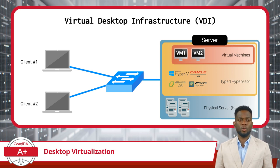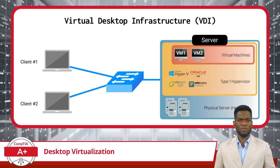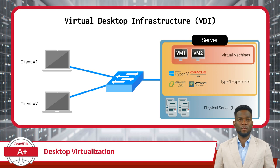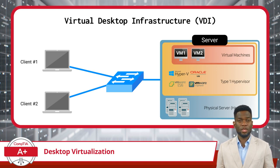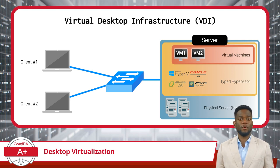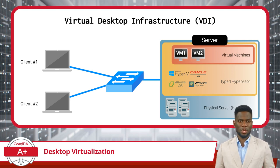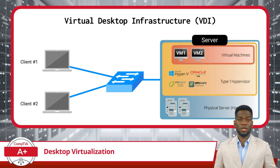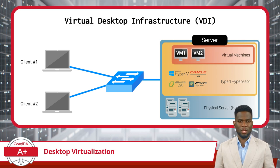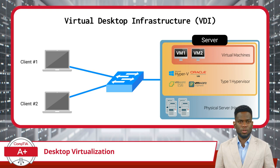Then there are the virtual machines, which house our virtual desktops. These virtual machines reside on the server and are controlled by a special piece of software known as a Type 1 hypervisor. With VDI, each user will have their own virtual machine, complete with an operating system, applications, and their personal files. Just imagine each virtual machine as a personalized workspace, tailor-made for each user. Together, these components form the backbone of VDI.